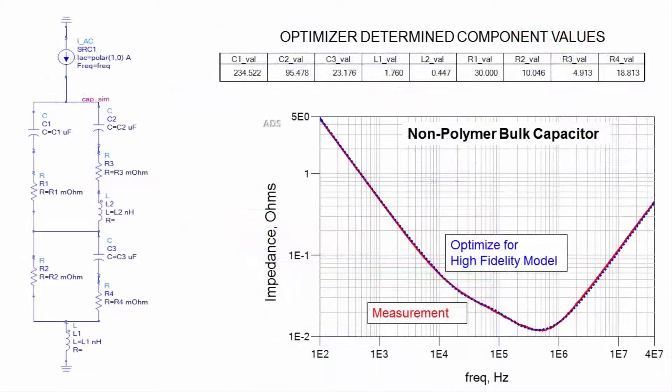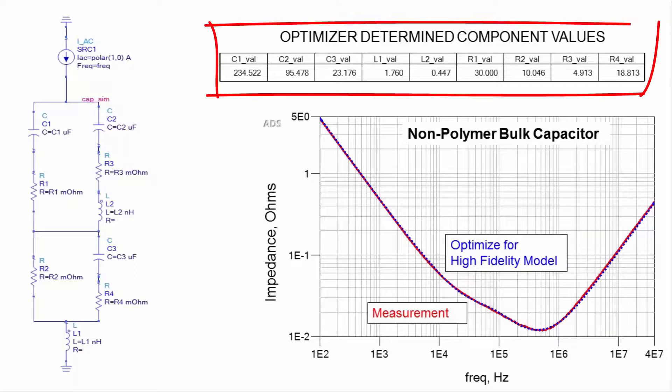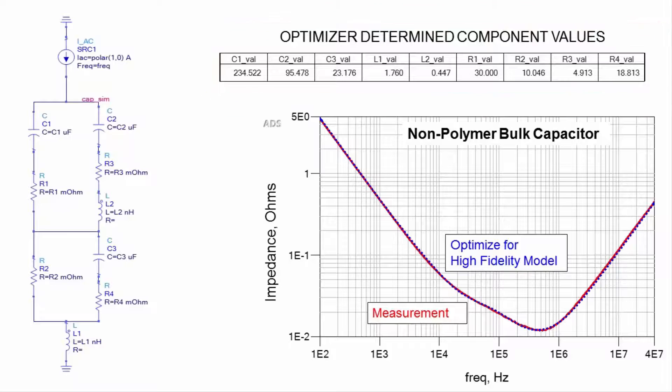Once the optimizer is completed, all of the model parameter values are listed, and both the measured and simulated capacitor impedance are displayed. This model is also a near-perfect match.